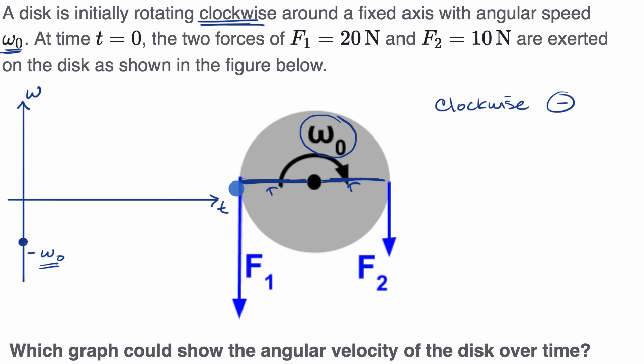But F₁ is providing a torque in the counterclockwise direction, while F₂ is providing a torque in the clockwise direction. The way it's depicted, F₁ is larger and they're both R away from the center of rotation. So your net torque is going to be counterclockwise. It's going to be against the direction of the starting rotation.